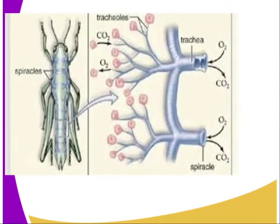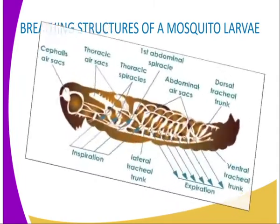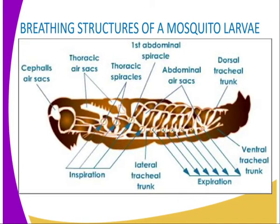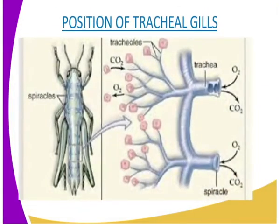I'm going to show you a diagram showing the position of the tracheal system of an insect. These are the breathing structures of an insect, which are mainly the trachea. The spiracles are external openings present on either side of the abdomen and thorax of an insect, through which air from the atmosphere enters the body.